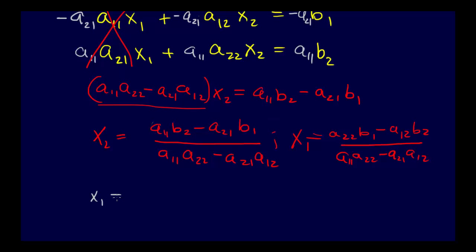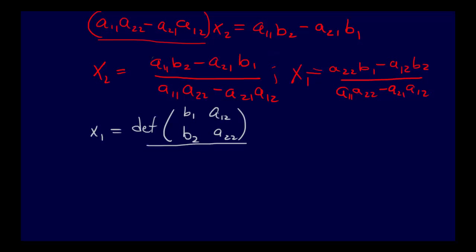As a reminder, Cramer's method said x1 equals the determinant of b1, b2, a12, a22 over the determinant of A. That is equal to b1 a22 minus a12 b2, all over a11 a22 minus a21 a12. That was just recalling from the definition of the determinant.